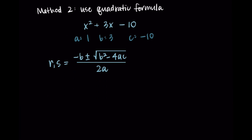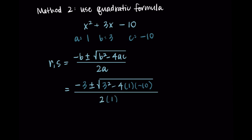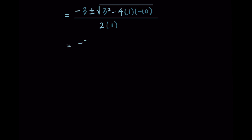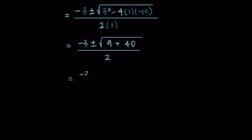You could type this all into a calculator by substituting the values. Since I know this works out nicely, I'll do it by hand. Our b value is three, so I have negative three plus or minus the square root of three squared minus four times one times negative 10, all over two times one. Simplifying inside the radical: nine plus 40, since three squared is nine and negative four times one times negative ten is positive 40. In the denominator, two times one is two. Combining the nine and forty gives negative three plus or minus the square root of 49 all over two. The square root of 49 is seven, so I have negative three plus or minus seven all over two.